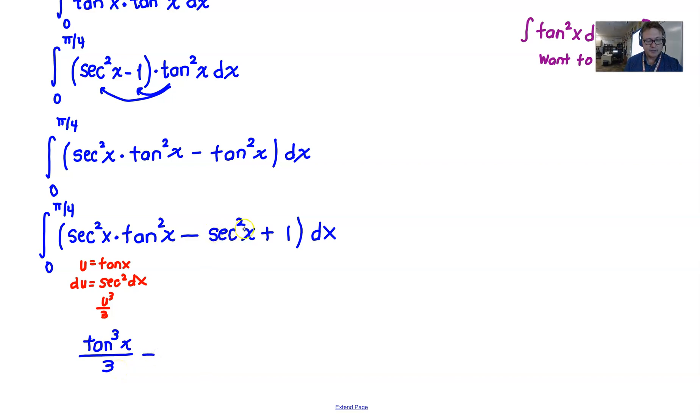Meanwhile, antiderivative of secant squared is just tangent. Antiderivative of 1 with respect to x is x. And now all of this is in terms of x. We basically just evaluate it from π/4 down to 0, and let's see what we get.